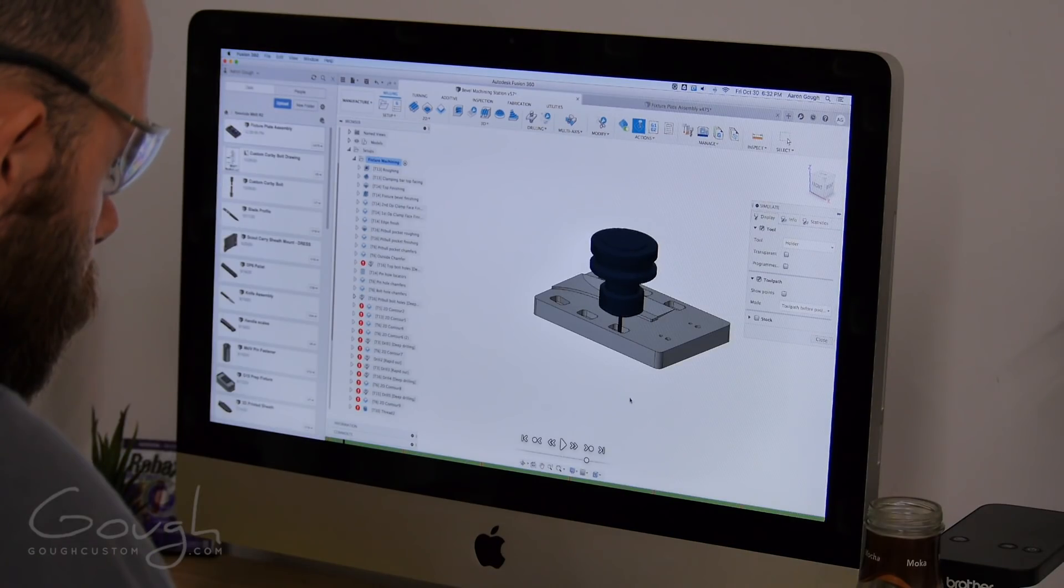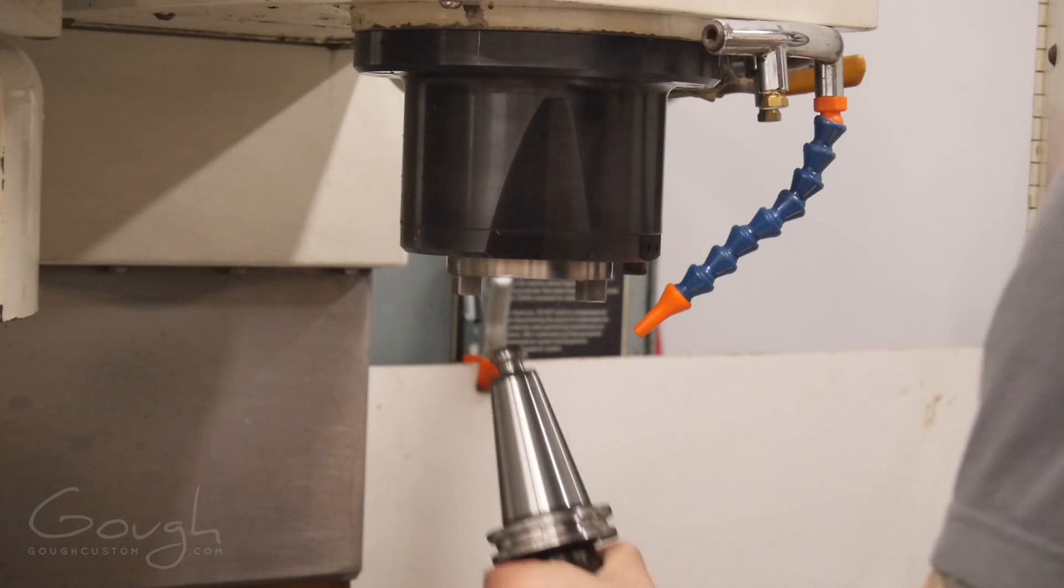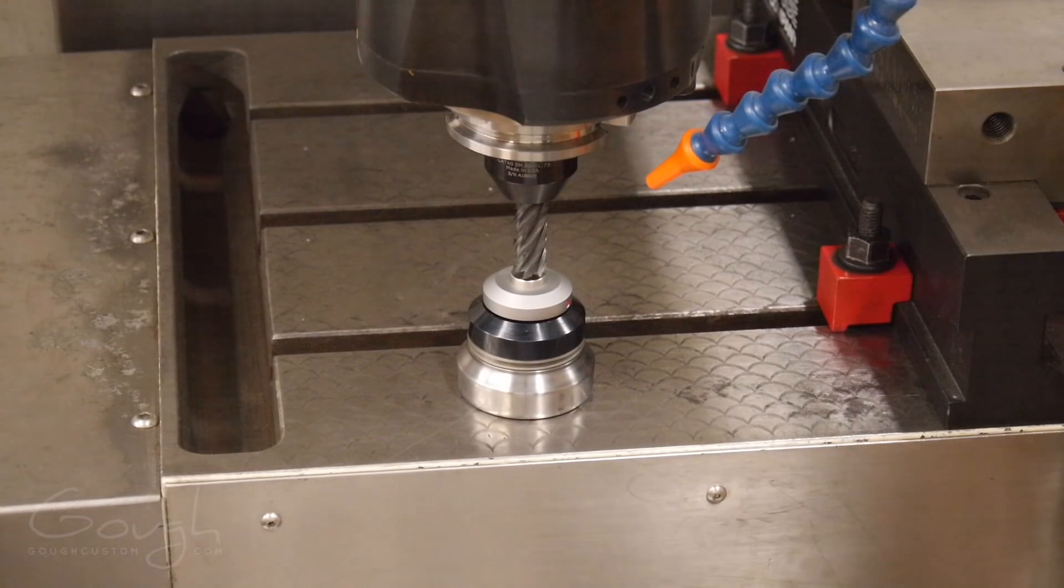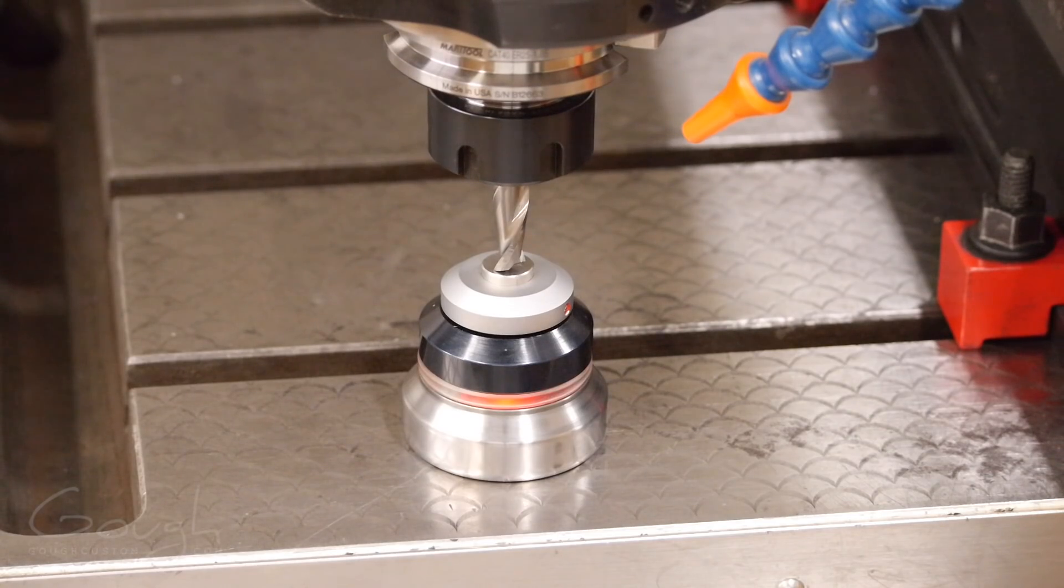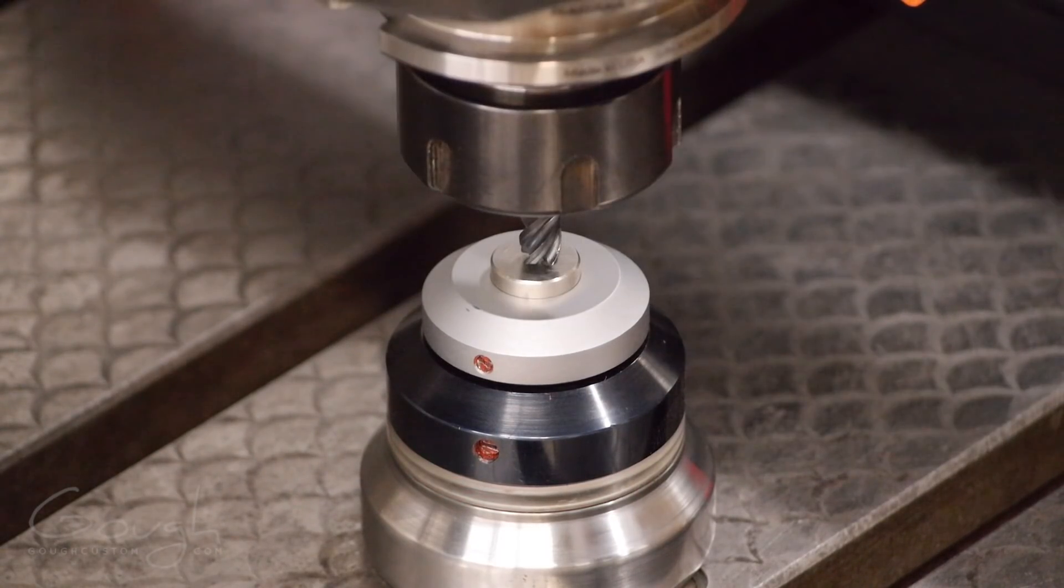Once the toolpaths are generated I then go through and simulate each of them to make sure that the tool holder or the tool shank doesn't run into the material in some unexpected way. With all of the tools set up and all the toolpaths generated it's time to start loading the tools into the machine and measuring each of them. I have to measure the length of each tool individually so that the machine knows where the tips of them are and can guide them accurately.